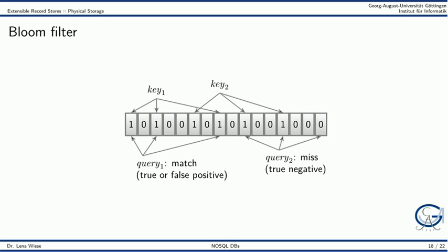Let's look at a small example of a bloom filter. Here we have a bloom filter of length 16. We use three different hash functions. When writing to the extensible record store for each key, the three hash functions are computed and the appropriate bits in the bloom filter are set to 1.